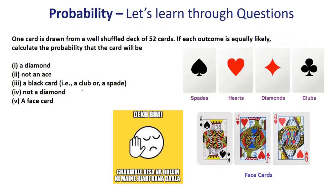Before we understand probability and the questions, let us understand the key things about a pack of cards. There are four suits: spades, heart, diamond, and club. Spade and club are the black suits, heart and diamond are the red suits.